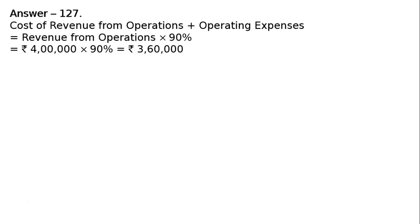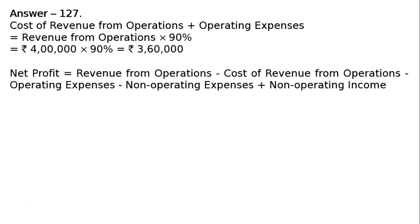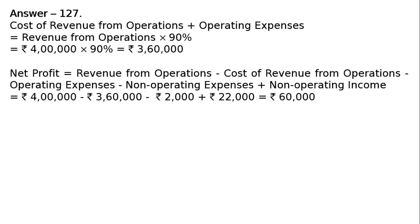Net profit equals revenue from operations minus cost of revenue from operations minus operating expenses minus non-operating expenses plus non-operating income. That is rupees four lakhs minus rupees three lakh sixty thousand minus rupees two thousand plus rupees twenty-two thousand, which equals rupees sixty thousand as your net profit.